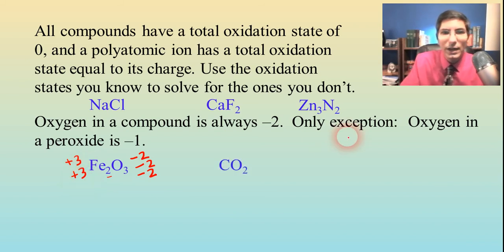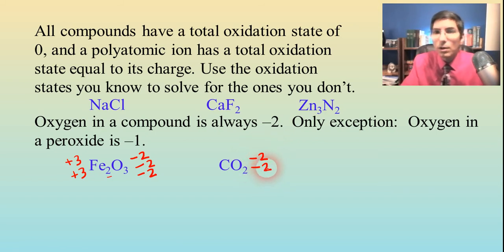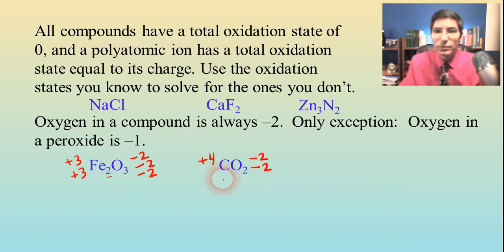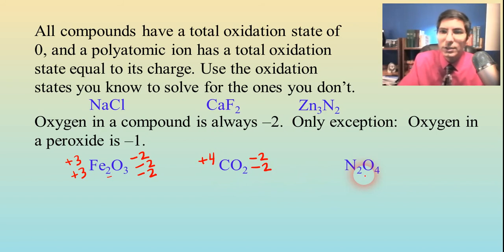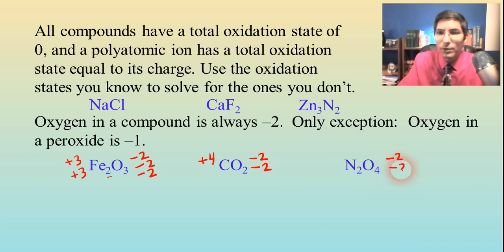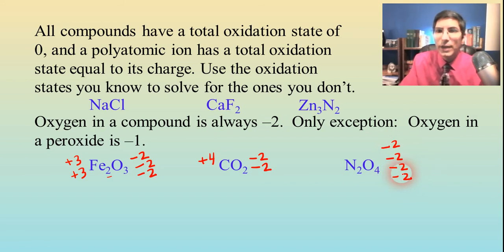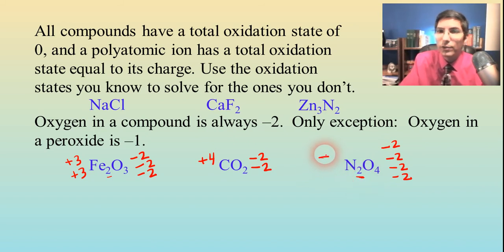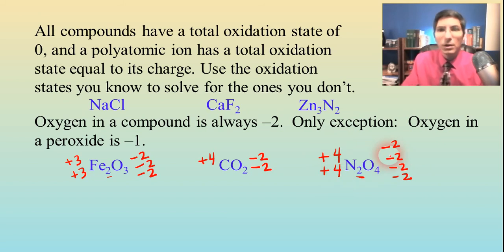Or we could look at carbon dioxide — oxygen is minus two, and we've got two of them, so that's minus four, which means the carbon would have to be positive four to balance those charges. Or dinitrogen tetroxide: oxygen is minus two, and we have four of them, so that's a total of negative eight, meaning the nitrogens would have to be positive eight total. We divide that by two — there are two atoms — so that's positive four for each. We use what we know to solve for what we don't know.